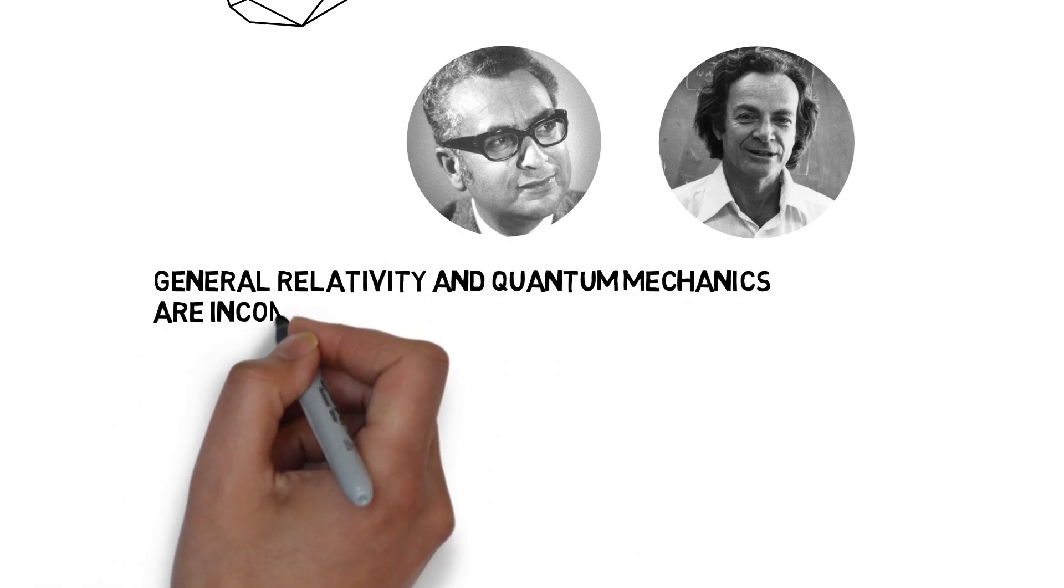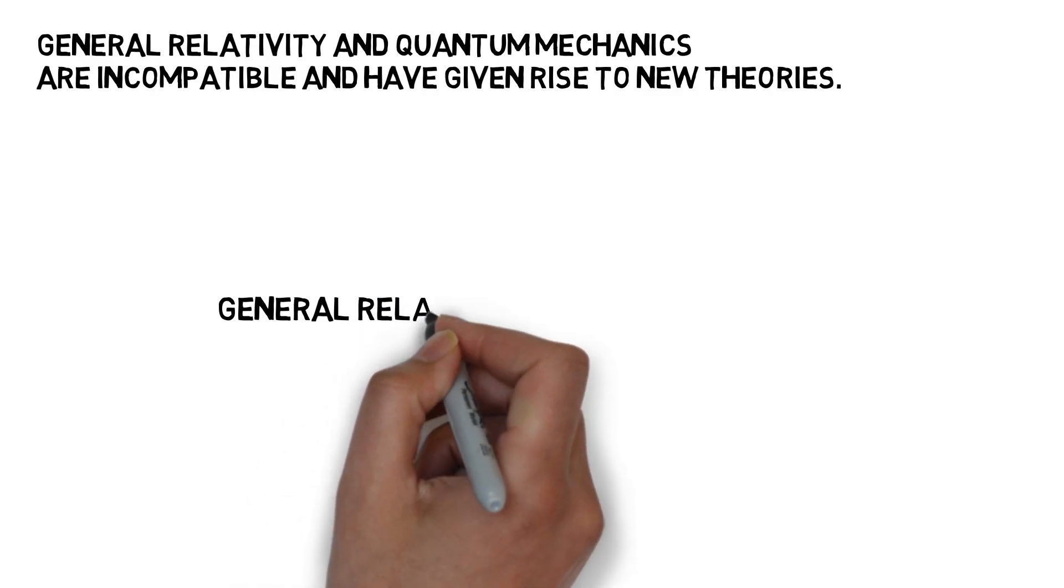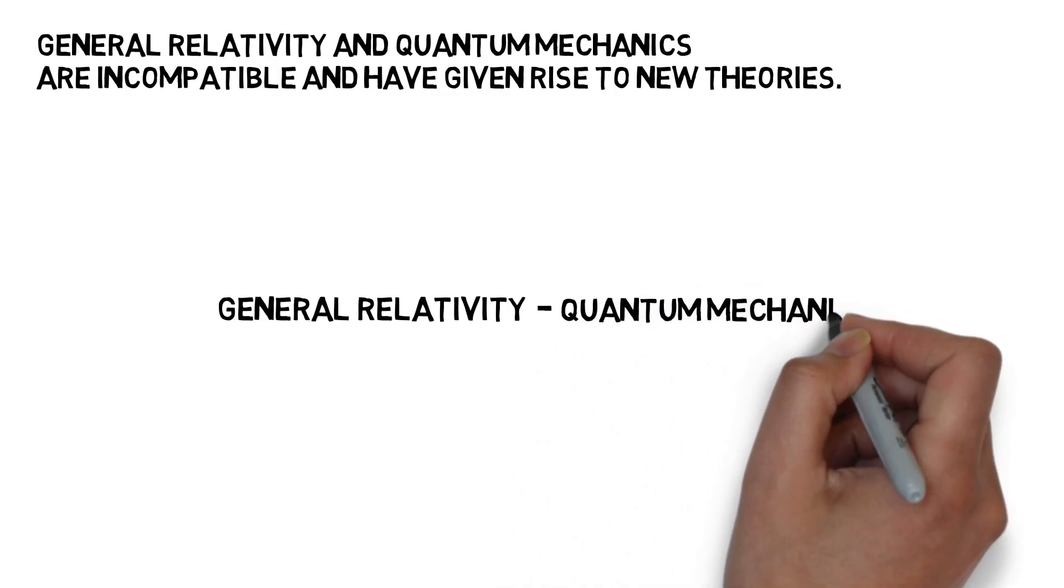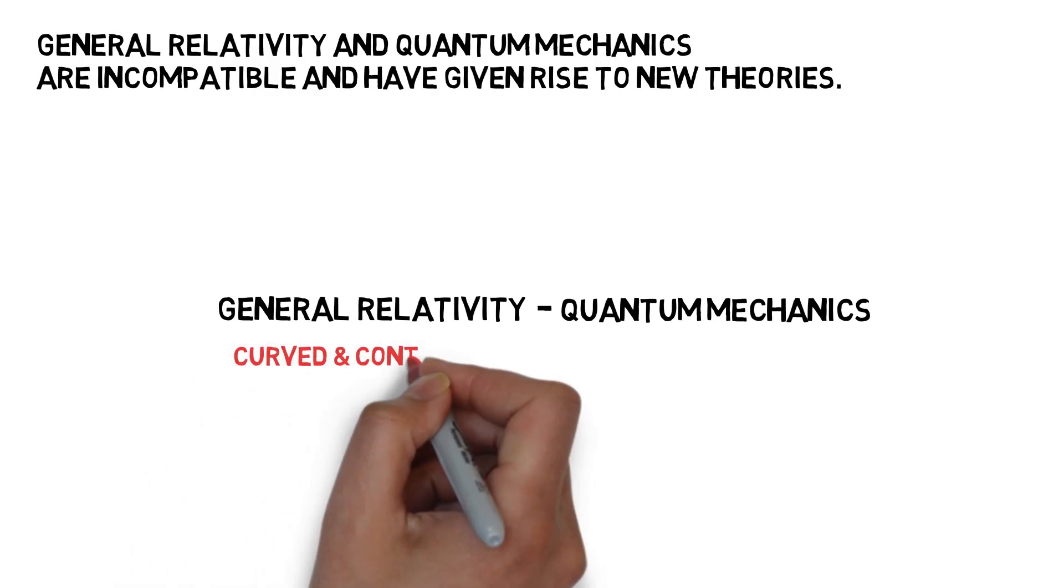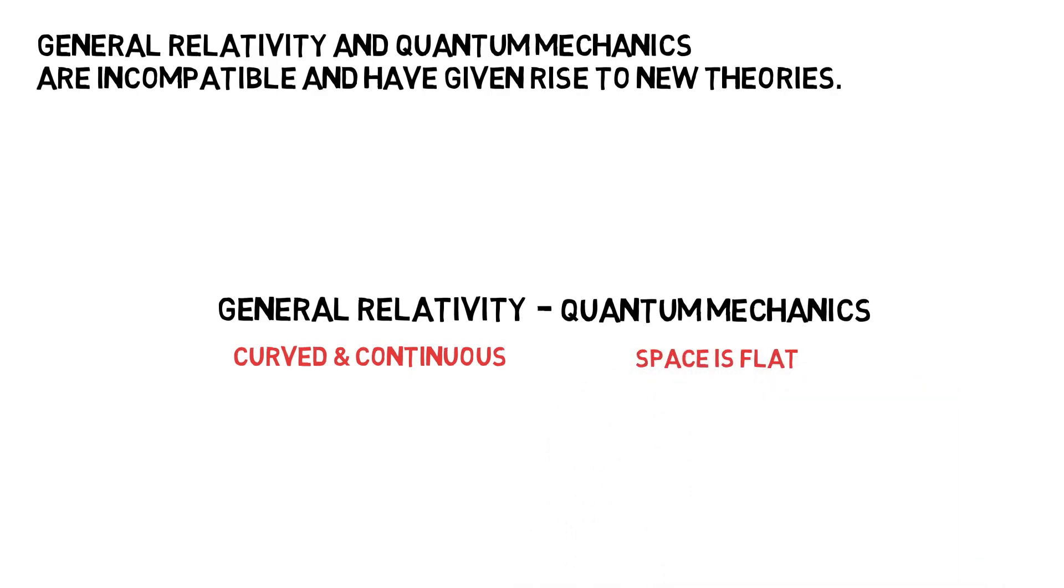General relativity and quantum mechanics are incompatible and have given rise to new theories. It is time to look at the two pillars of modern physics in relation to each other. In a perfect world, this would result in a seamless interweaving of the micro and macro universes. But sadly, this isn't what happens. In their current form, general relativity and quantum mechanics are in conflict. This is the big paradox with which physicists have to contend today. Taken on their own, both theories are remarkably accurate in predicting what goes on in the universe, but when you try to bring them together, contradictions abound. For example, when we use general relativity to observe space, energy, and matter, we are looking at a universe that is curved and continuous. But in quantum mechanics, space is flat, and energy comes in finite packets known as quanta.